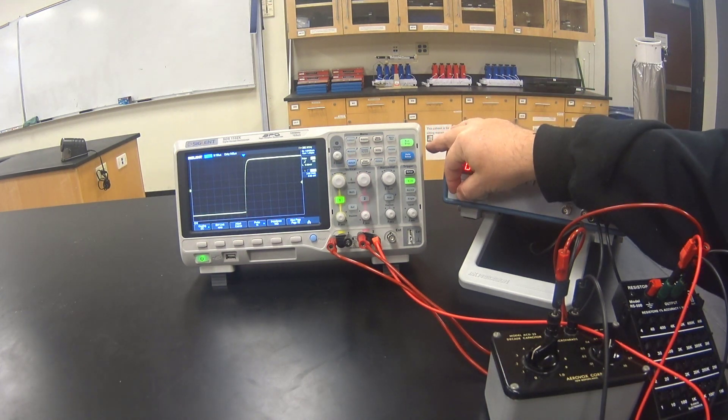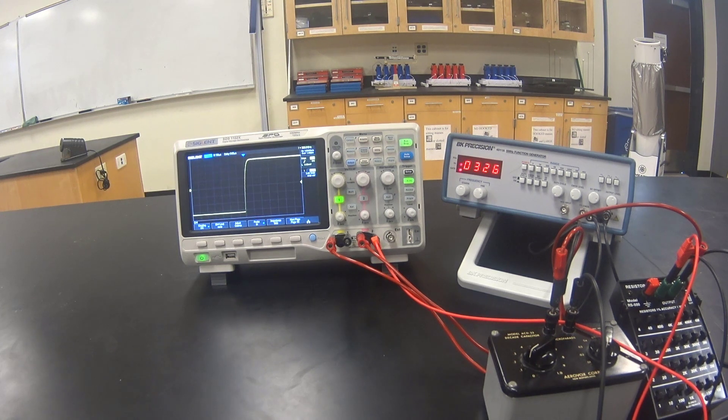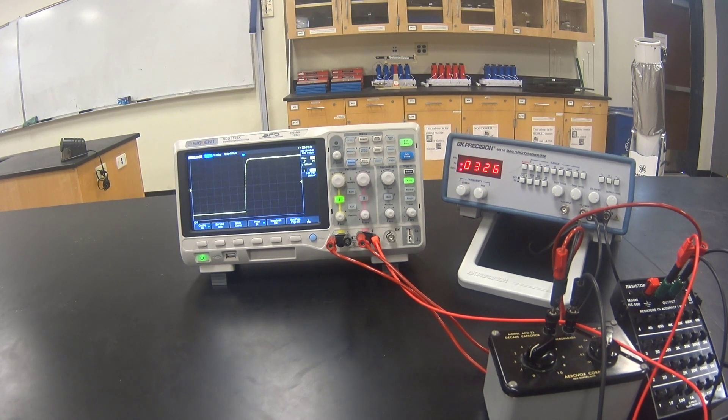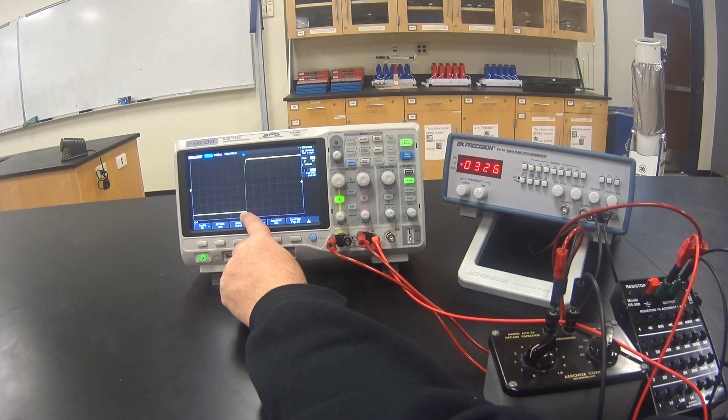Notice as I change the output frequency on the function generator, the display on the oscilloscope doesn't change. This is because the frequency of the square wave is long compared to the charging time of the capacitor. Here the capacitor is fully discharged, and here it's charged.